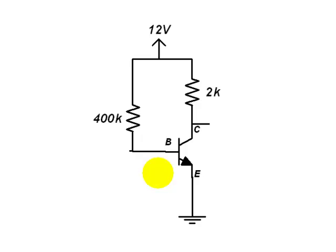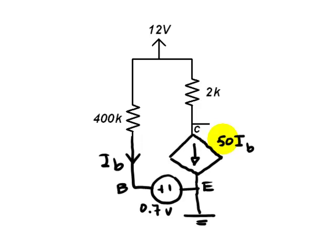The first thing will be to replace the transistor, this one, by its linear mode equivalent circuit like so. We still identify the base, the emitter, and the collector. This is a beta 50 transistor for this exercise.